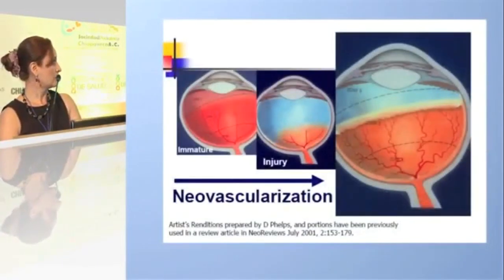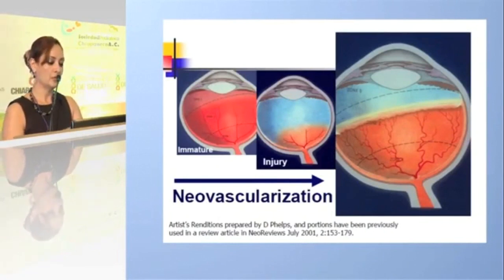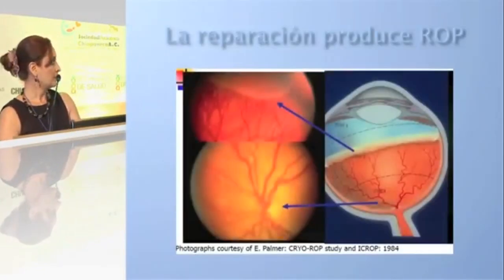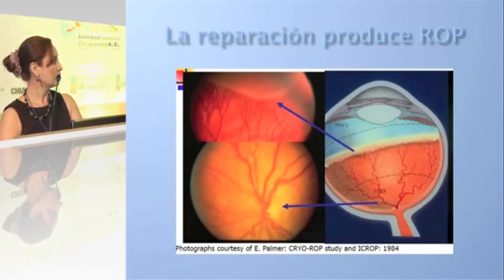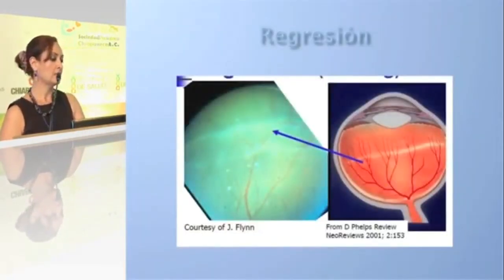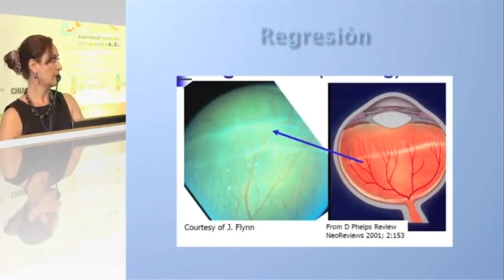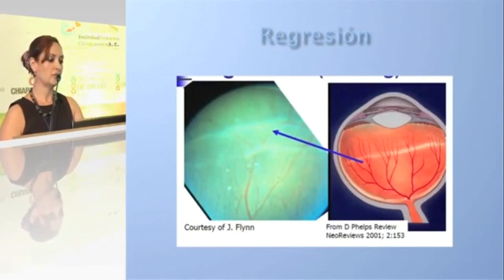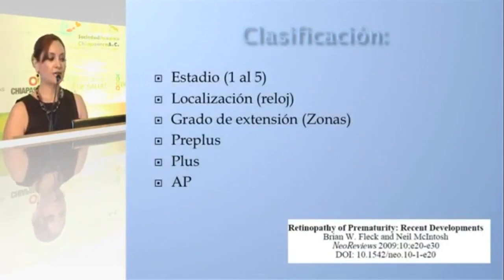This entire process generates neovascularization across the different stages of retinopathy of prematurity. The repair process itself produces the different stages of retinopathy. If all these mechanisms are controlled, regression of retinopathy can occur; however, if not controlled, retinopathy progresses and we can then speak of its classification.